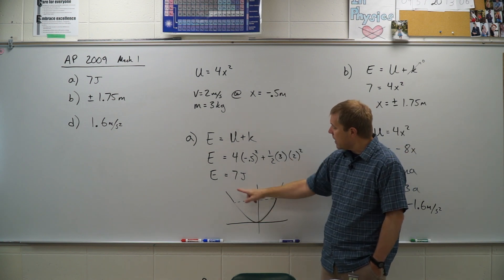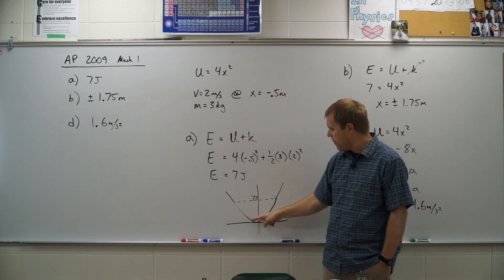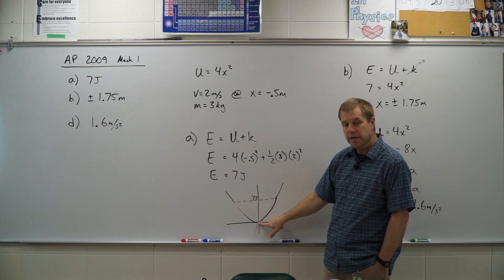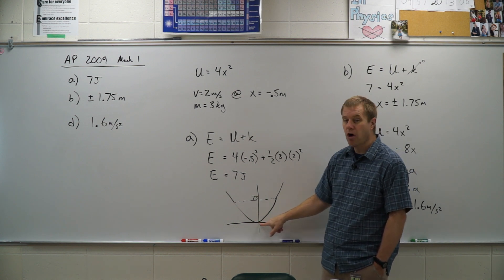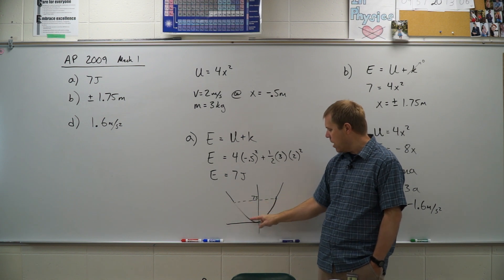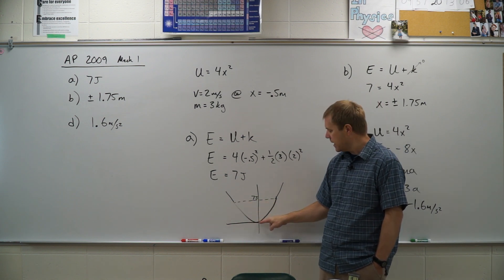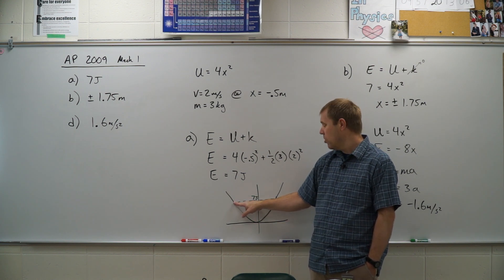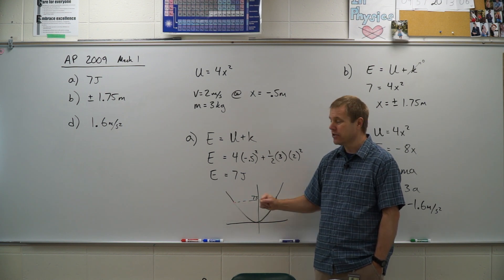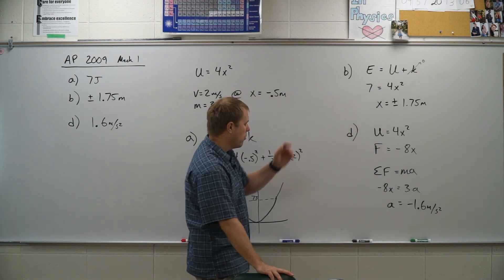If I graph this potential energy function, it looks like a parabola. At zero it has zero potential energy and all kinetic energy, but it's bound at the 7 joule mark — meaning kinetic energy gets smaller and smaller until it reaches zero and it's all potential energy.